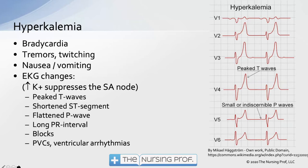Hyperkalemia EKG findings include tall peaked T waves and small P waves. You may also see tremors, twitching, nausea, and vomiting. These EKG changes occur because the elevated potassium interferes with normal electrical activity within cardiac cells, and can lead the patient to develop ventricular dysrhythmias.